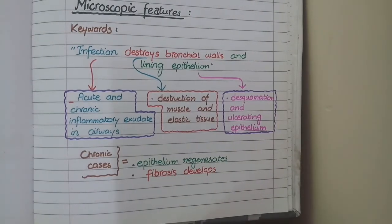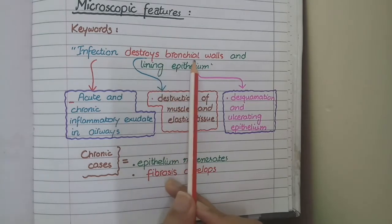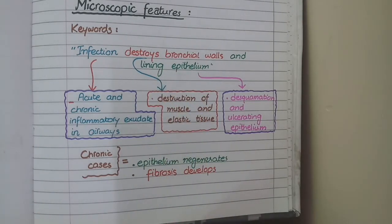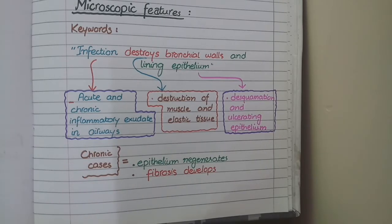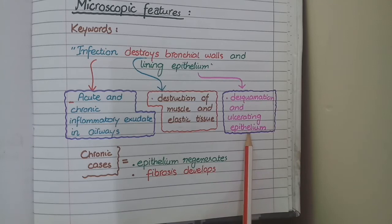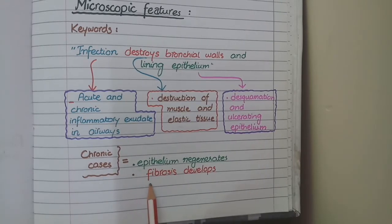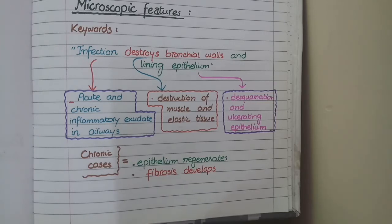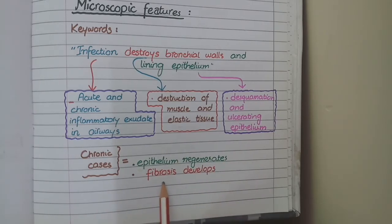For microscopic features of bronchiectasis, the keywords are: infection destroys bronchial walls and lining epithelium. In response to infection you see acute and chronic inflammatory cells — neutrophils, lymphocytes and macrophages. The infection destroys the muscle and elastic tissue of the bronchial wall, and it also destroys the lining epithelium, manifested as desquamation and ulcerating epithelium. In more chronic cases, the epithelium regenerates but the destroyed muscle and elastic tissue cannot be regenerated, so it is replaced by fibrous tissue — fibrosis.